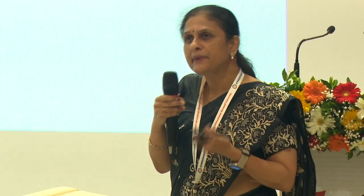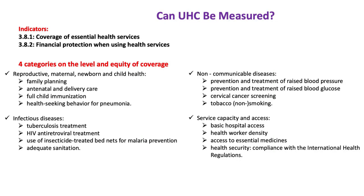These can be measured by indicators. SDG 3.8.1 talks about indicators for coverage and 3.8.2 about financial protection. The four main categories under 3.8.1 are: reproductive, maternal, newborn and child health; infectious disease; non-communicable disease; and service capacity and access — under which these coverage indicators are measured.